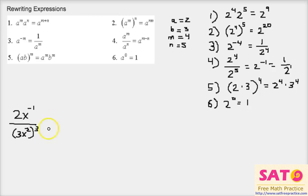First thing you want to do is unravel this parentheses so we can do that. 2x to the negative 1 power over, so if we have, don't forget to distribute the exponent to each number or integer or variable. So it'd be 3 to the third power times x to the 2 times 3, just like property 2, which is 6.